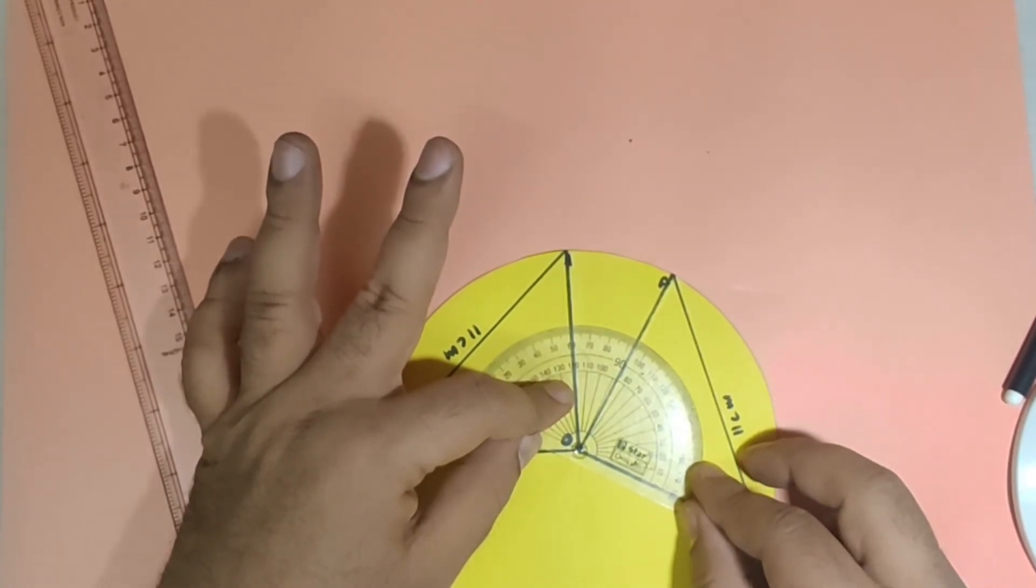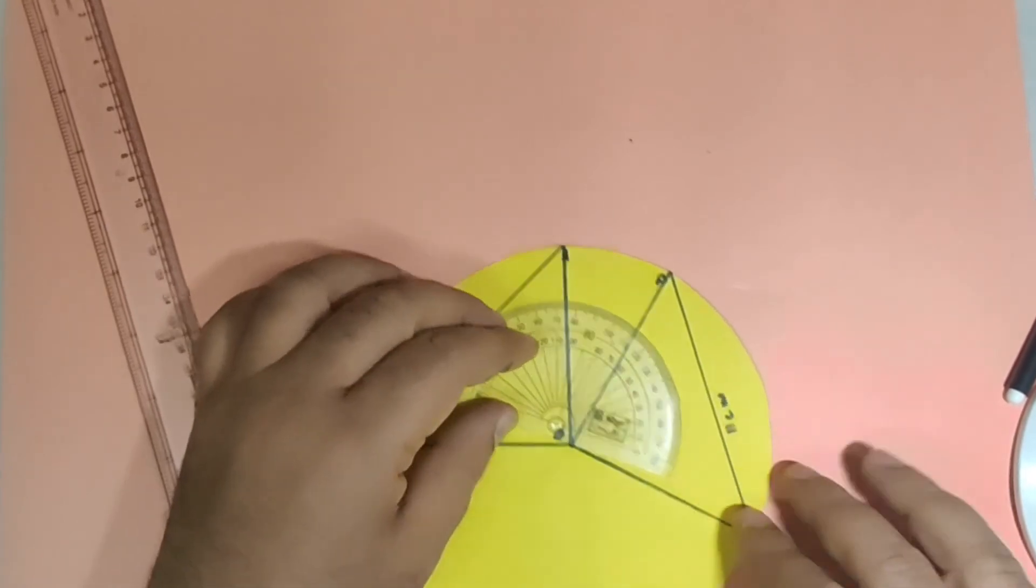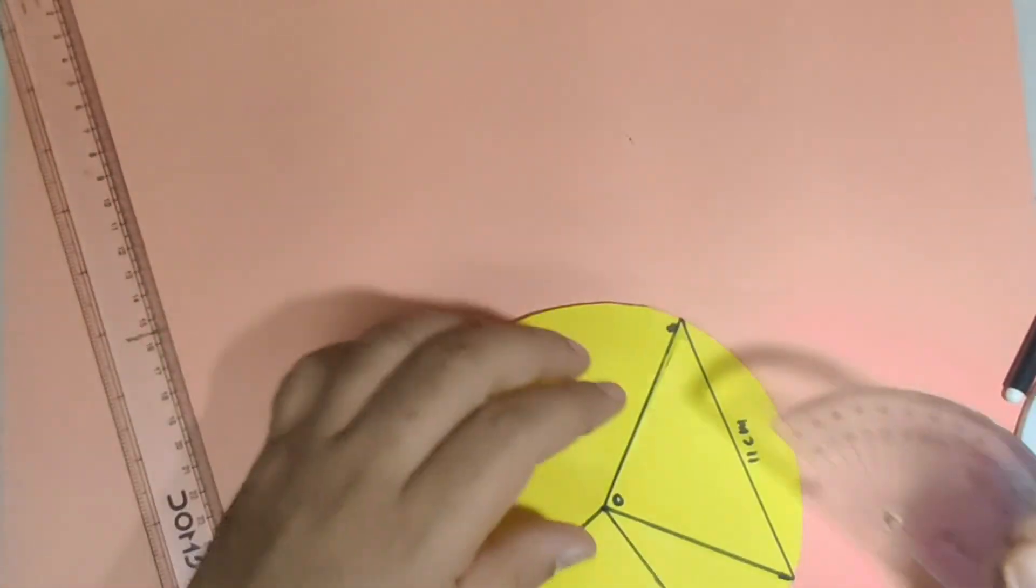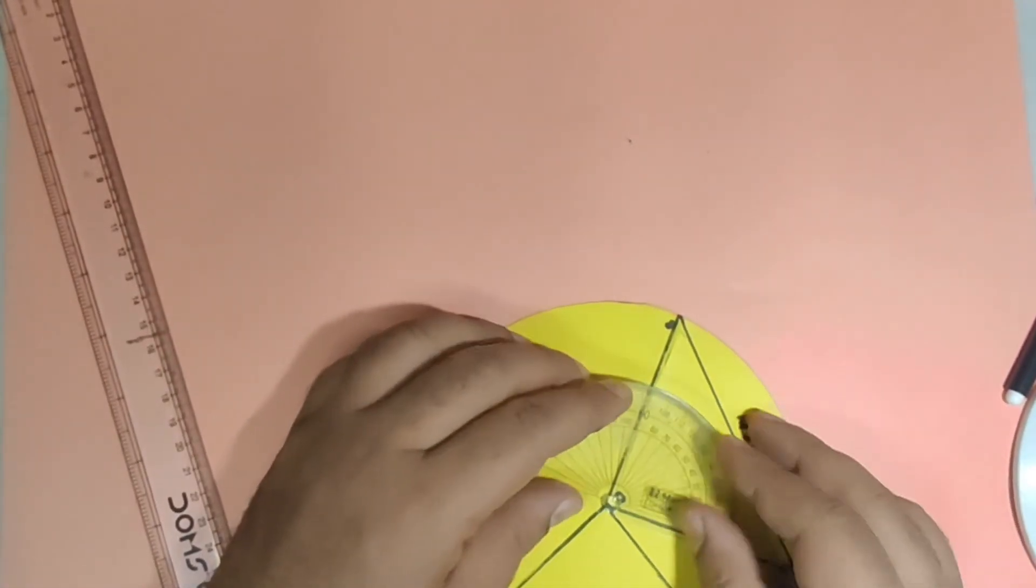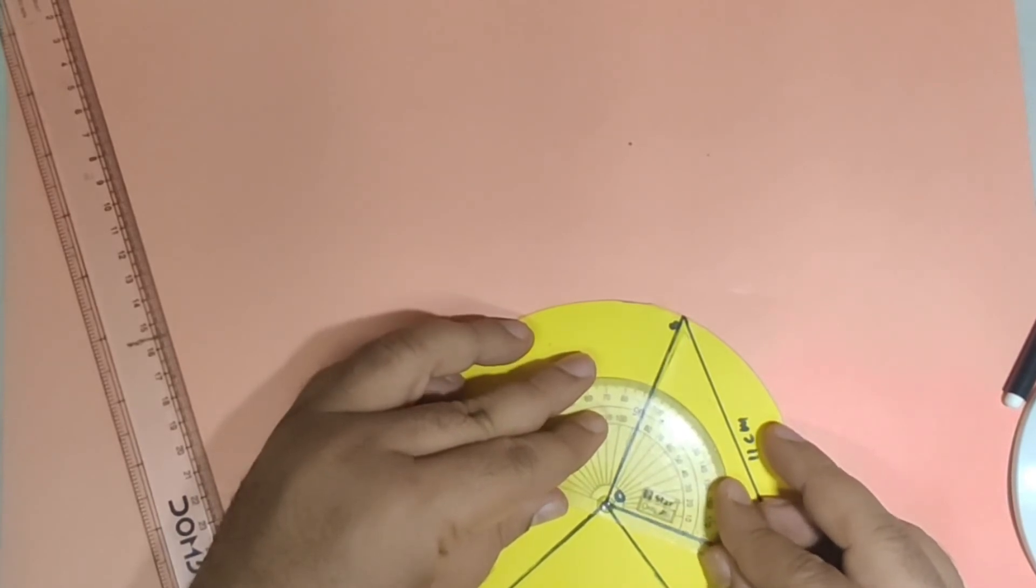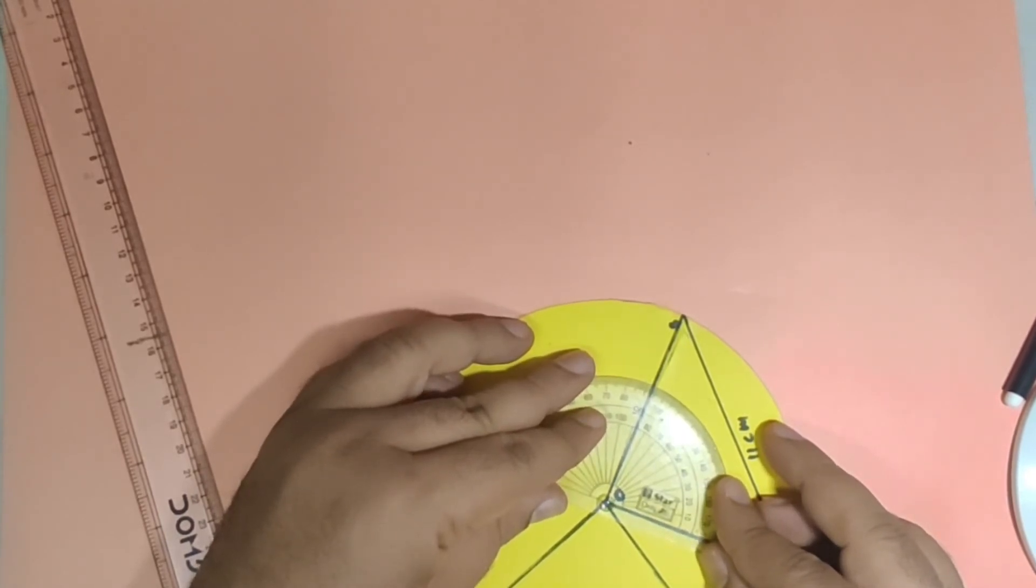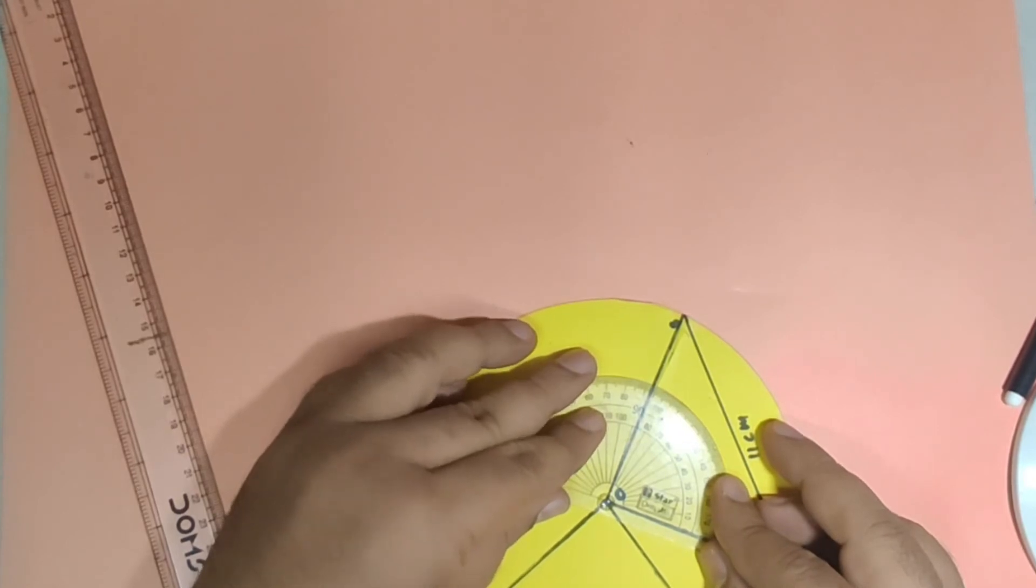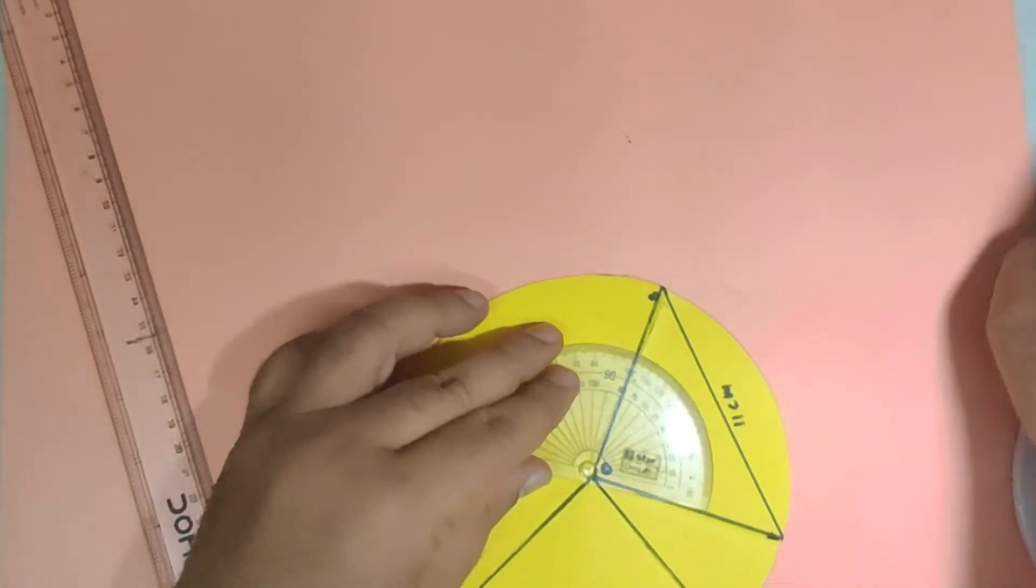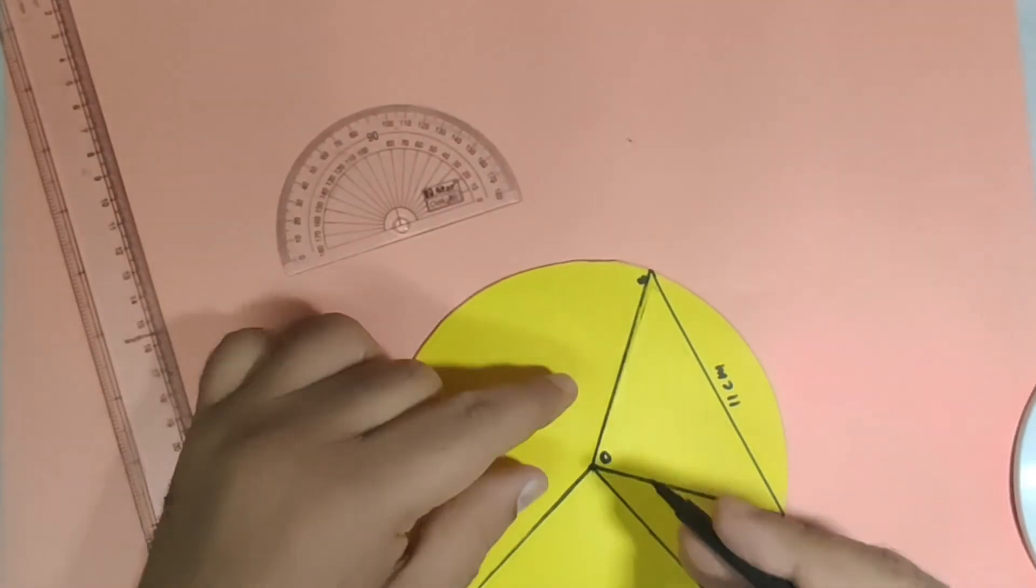This angle is approximately 87 degrees and let us measure the another angle which is angle AOB and this is also 87 degrees. You can see here, so both of these angles have come out to be 87 degrees.